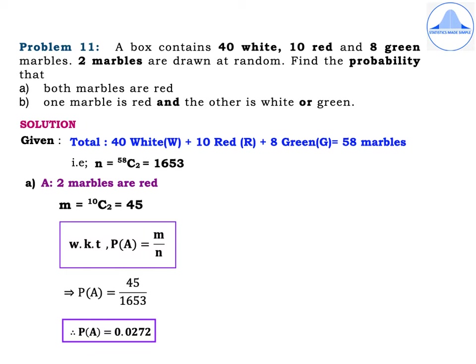Starting with the first subdivision, define event A as 2 marbles are red. Always be specific as to how many marbles we are choosing. Now there are 10 red marbles and out of 10 red marbles, you have to choose 2 marbles which should be red in colour. So M = 10C2, which is equal to 45. Then write the formula: P(A) = M divided by N, which implies P(A) = 45 divided by 1653. Therefore, P(A) = 0.0272.